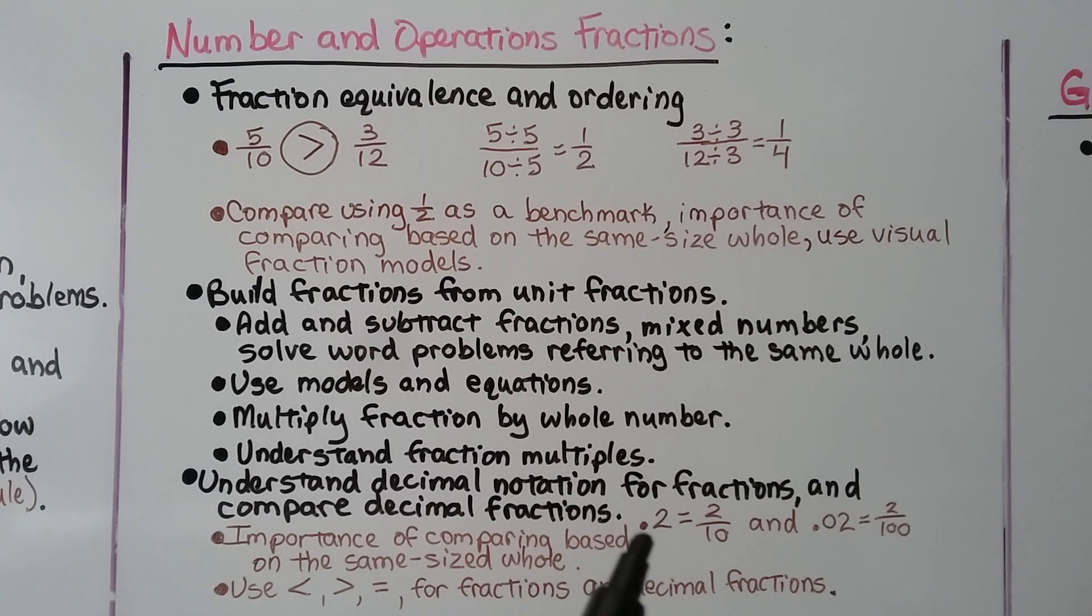So a decimal fraction would be like 2 tenths is a 2 numerator and a 10 denominator. It's easily turned into a fraction. See that?